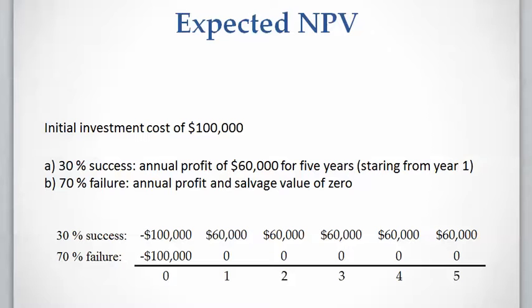We draw these two cases on a timeline. In the 30% success case, we have $100,000 of costs at the present time and $60,000 annual income from year one to year five. In the failure case, we still need to pay the initial cost for this project but will earn nothing in the future years.